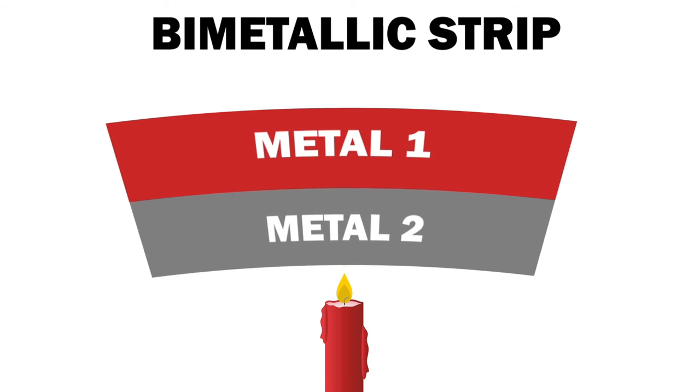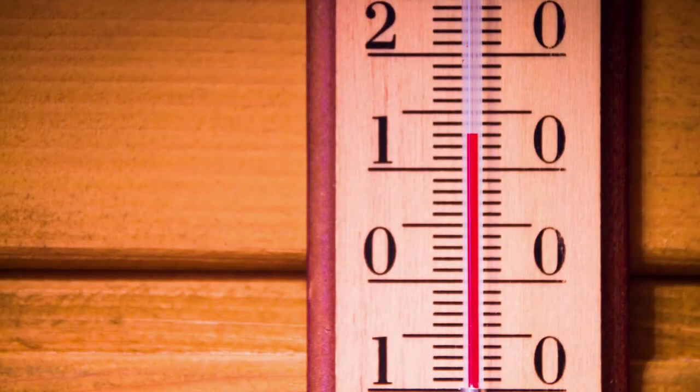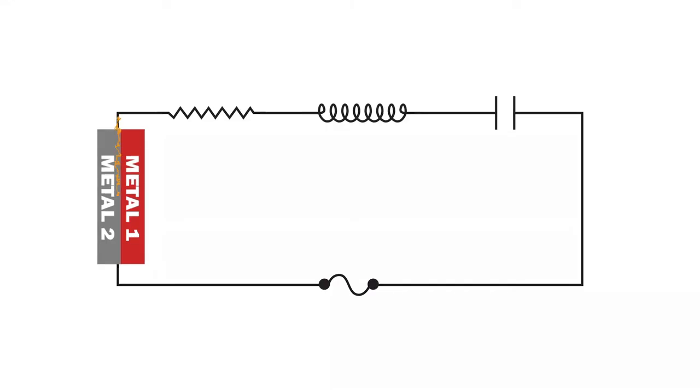This bimetallic strip is connected to a contact spring by small pins. At moderate temperatures, the contact point remains in physical contact with the bimetallic band. However, if the temperature of the iron exceeds a certain limit, the strip begins to bend toward the metal with a lower coefficient of expansion.